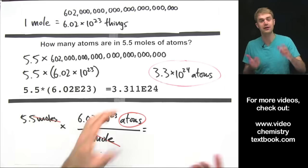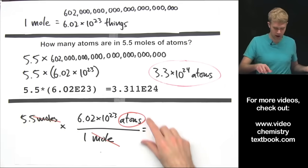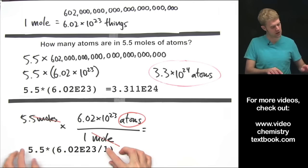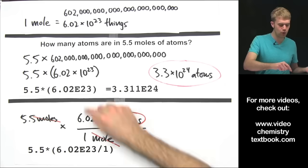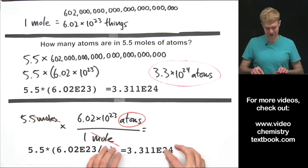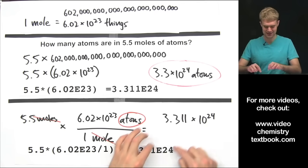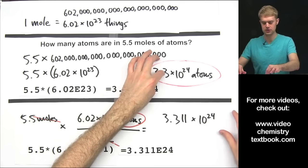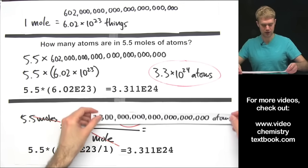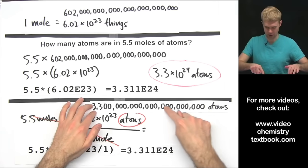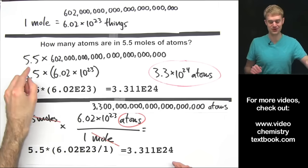You can type this into your calculator and get the same answer. Or, if you prefer, you can put in the whole conversion factor: 5.5 times, then in parentheses 6.02 E23 divided by 1. Either way, you get the same number, which in regular scientific notation rounds using sig figs to 3.3 times 10 to the 24th atoms. Don't forget — 3.3 times 10 to the 24th is just an abbreviated version of a very long number of atoms. That's how we go from moles to atoms.